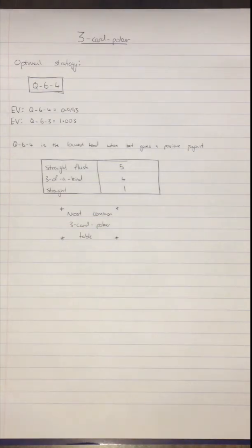Now, the most common payout table for 3-card poker is for a straight flush, the dealer pays to the better an additional 5 units and for a 3-of-a-kind 4 units and for a straight 1.